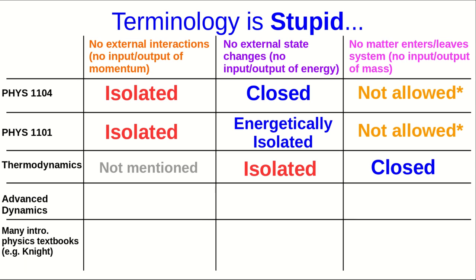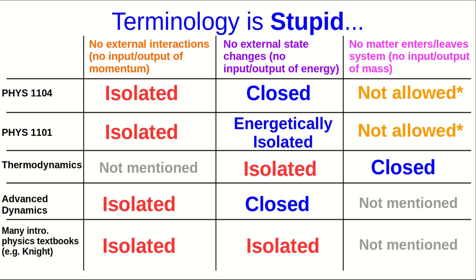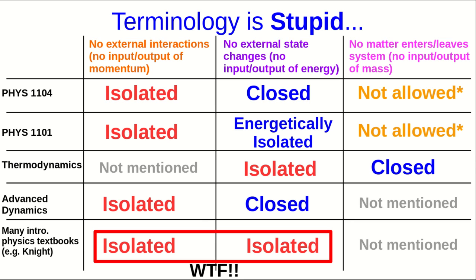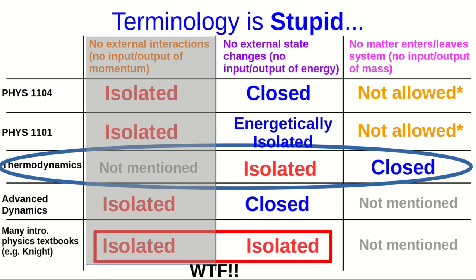In thermodynamics contexts, we usually don't care whether there's an input or output of momentum, so we don't need a term for it. We use 'isolated' to mean no input or output of energy, more or less, and 'closed,' more or less, to mean no input or output of matter. Many intro physics textbooks use the term 'isolated' for both no input or output of momentum and of energy — which doesn't make sense. I would love to stick with the terminology from the first-year courses, but we are largely never going to care about input or output of momentum, and we are going to care about matter coming in and out of our system. So we're going to switch to using the thermodynamics definitions. Sorry.